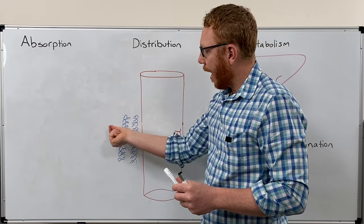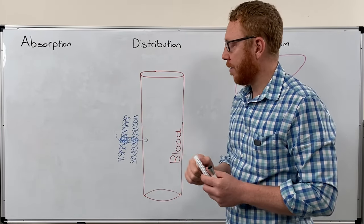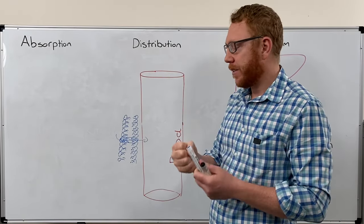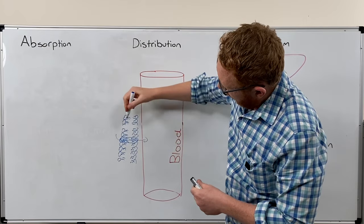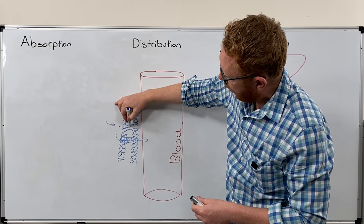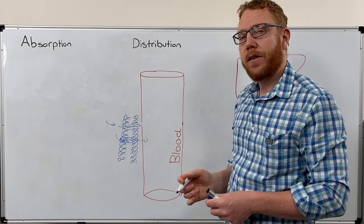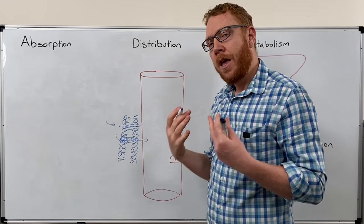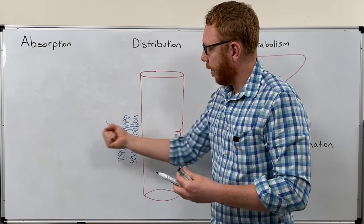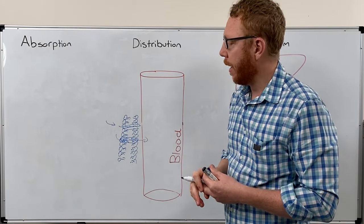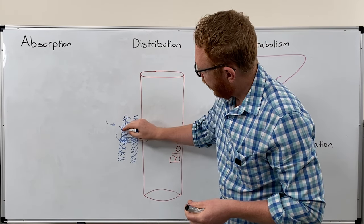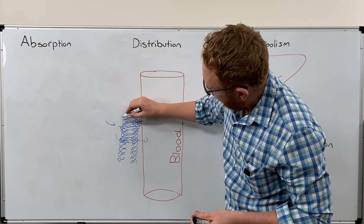Passive transport doesn't need energy. The next type is facilitated transport — where the drug is water-soluble but a bit bigger, which means it needs assistance. It gets carried across by a channel, but it's still following its gradient, so it's still not using energy. When transport requires energy — so we need to actually pull things across — we now require ATP. This is usually for a bigger water-soluble drug, requiring a transporter with ATP to pull it across.